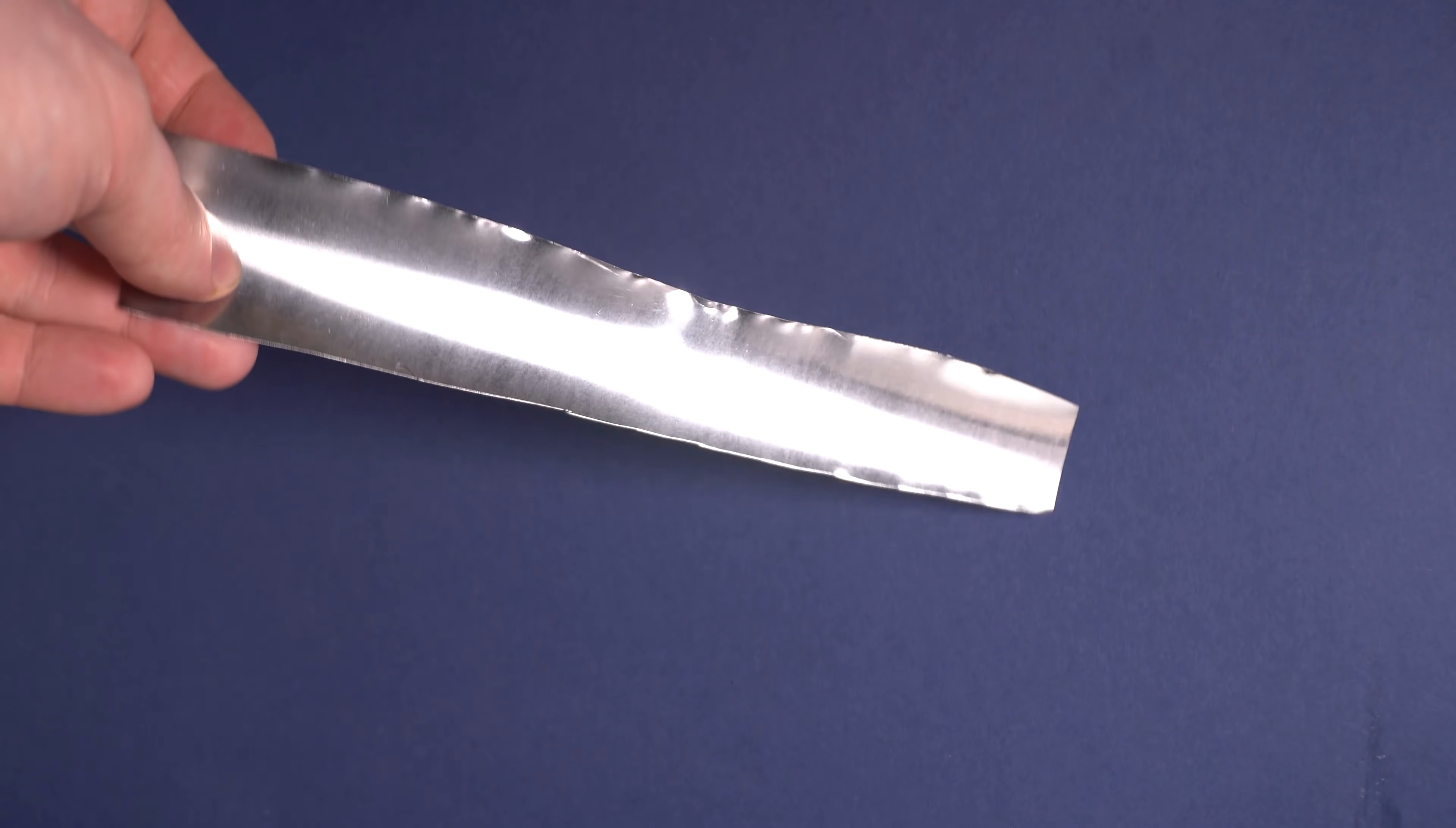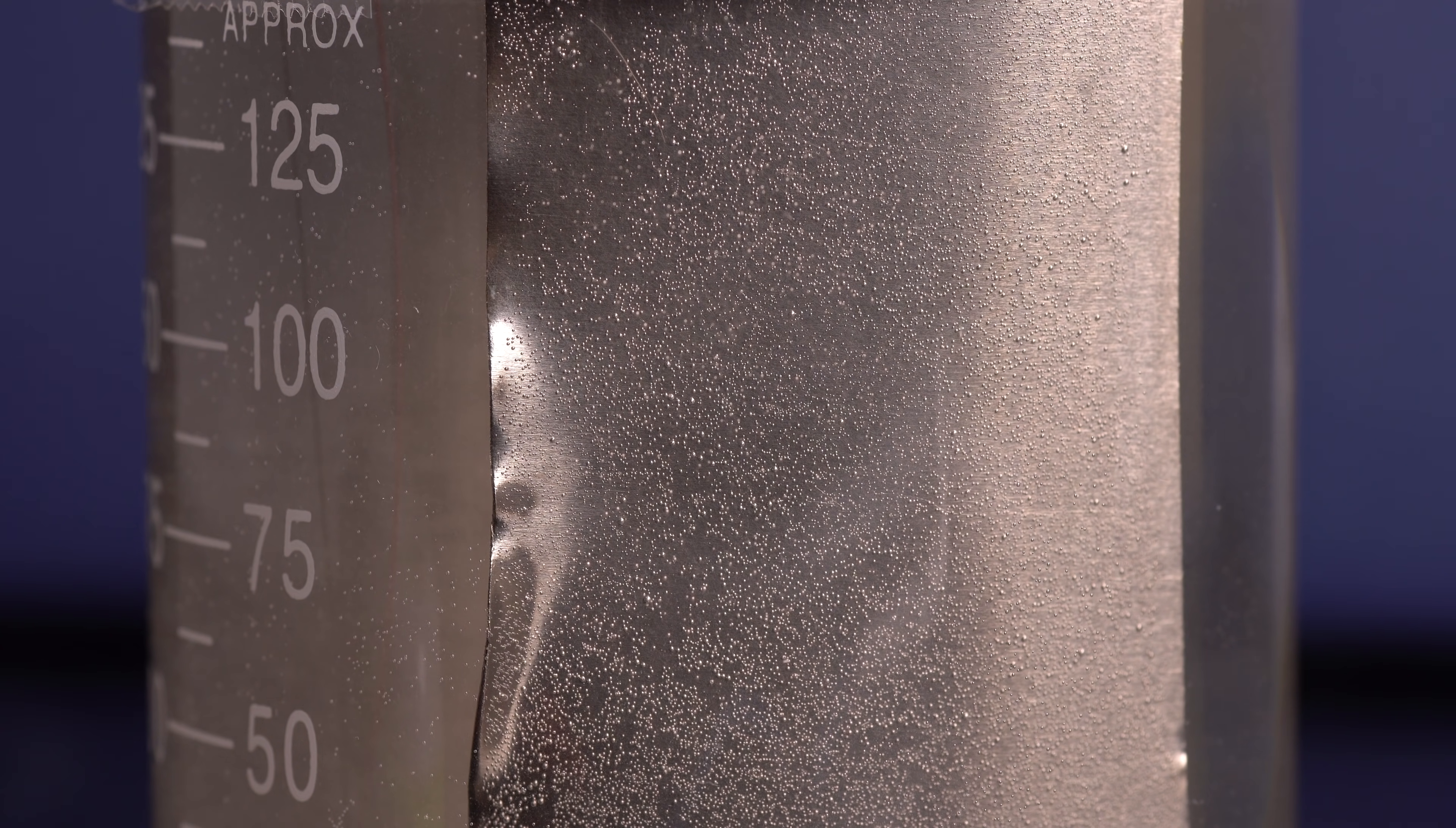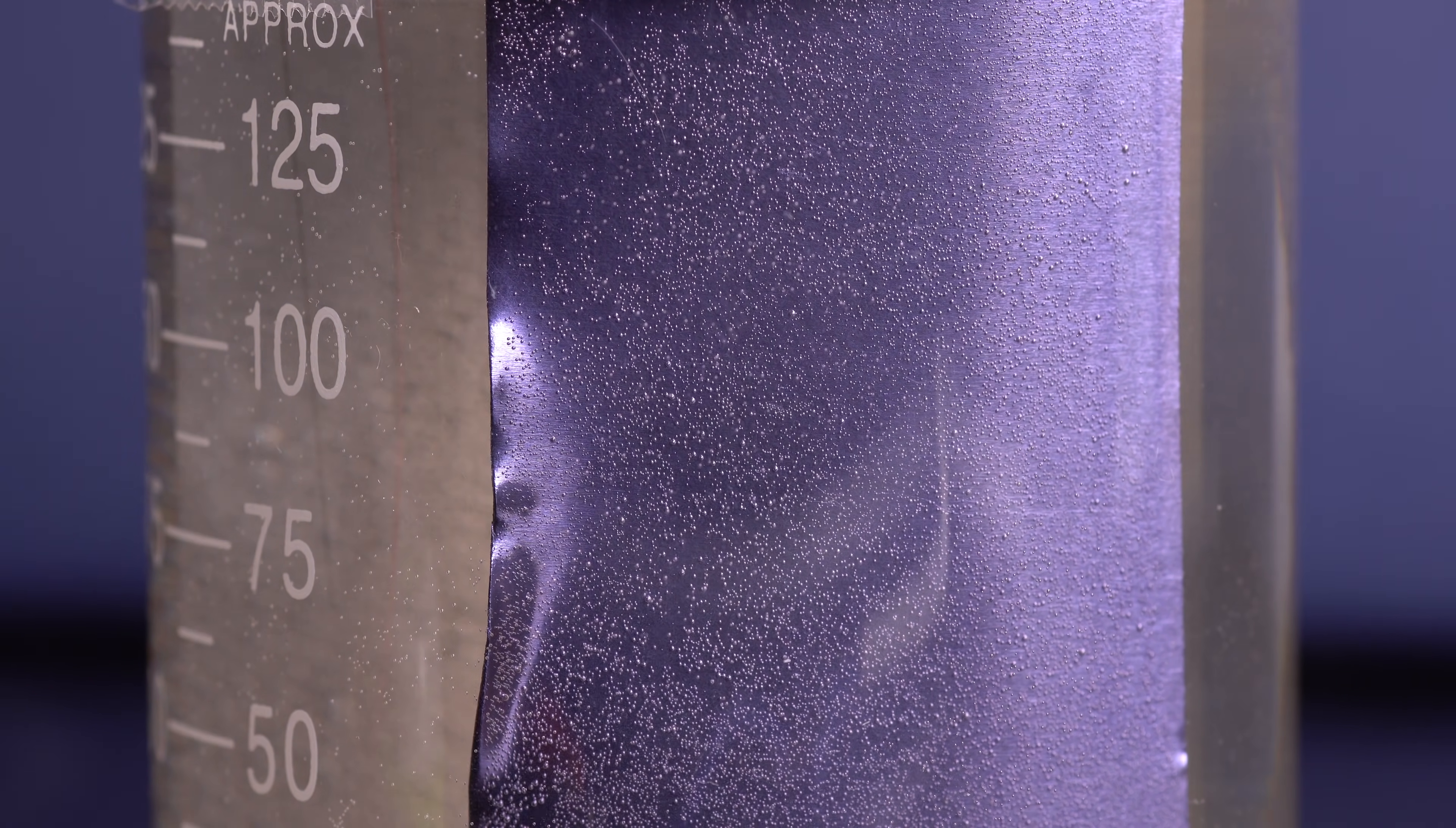As cathode, you can take the same plate of tantalum foil or any other piece of metal. Next, you simply need to input the necessary voltage, and voila, gray tantalum becomes golden. The higher the voltage, the more interesting will be the colors of the anodized tantalum.